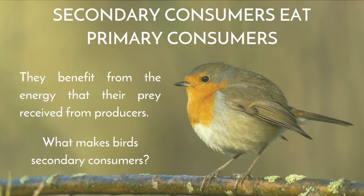Next in our garden ecosystem, we have secondary consumers. Secondary consumers eat primary consumers, benefiting from the energy that their prey received from producers. Secondary consumers include dragonflies and spiders, which eat other insects, birds, which also eat insects, and foxes, which eat rabbits.